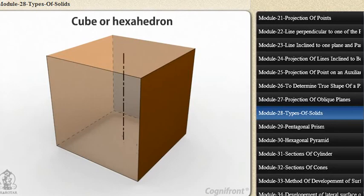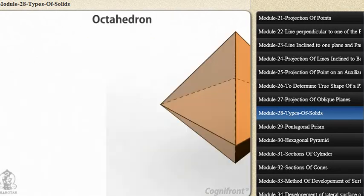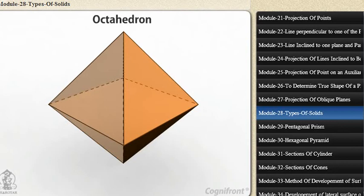Two, cube or hexahedron. It has six faces, all equal squares. Three, octahedron. It has eight equal equilateral triangles as faces.